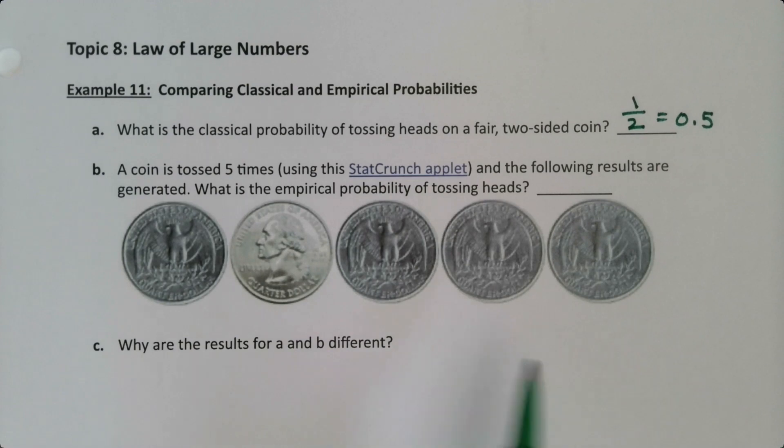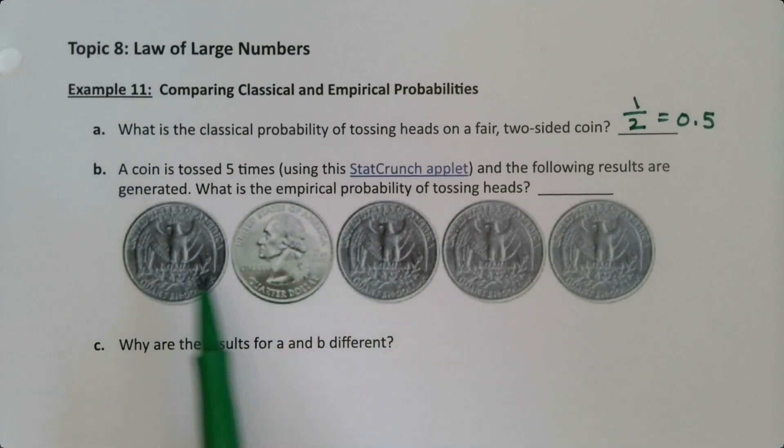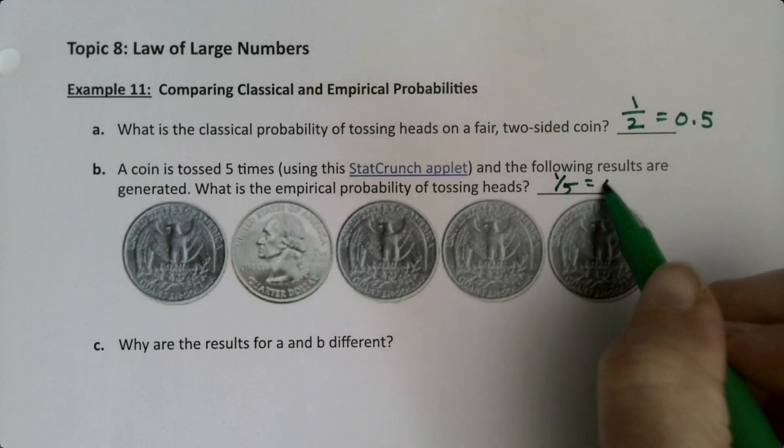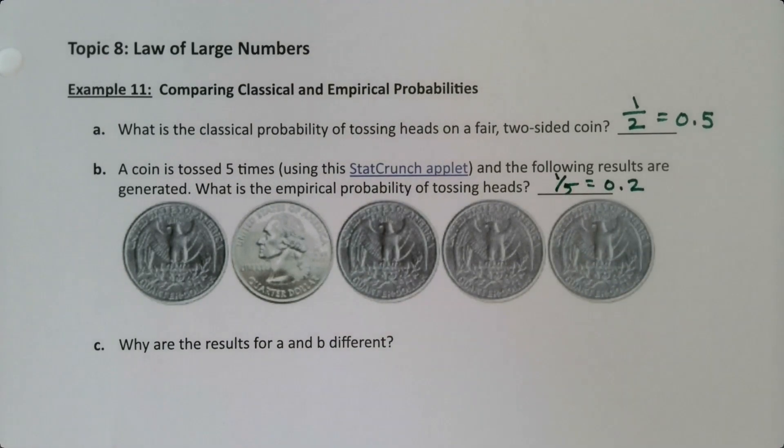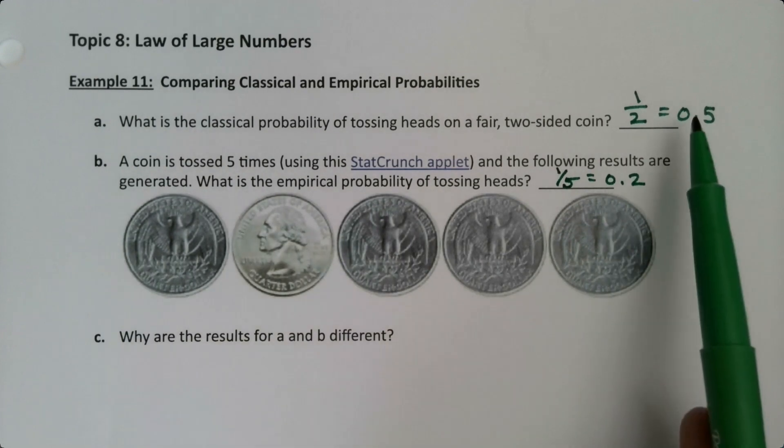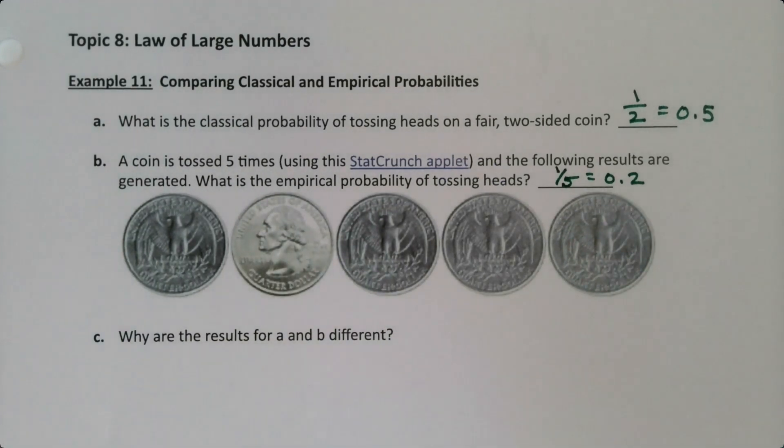So I actually have a StatCrunch applet and I had it toss the coins for me. It's in one of the applets if you're interested. And so I had it tossing it and it came up with one head out of five tosses. So this is one out of five, which is 0.2 as a decimal. That's the empirical probability because it's from data. That's the classical probability for part A because I didn't grab a coin, I just thought about it in my head.